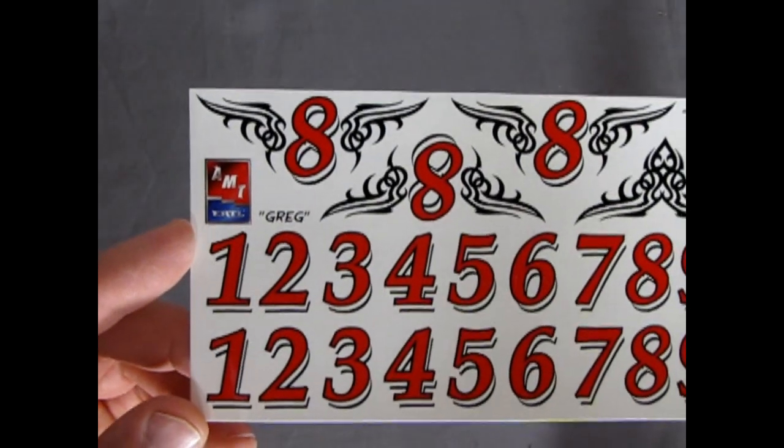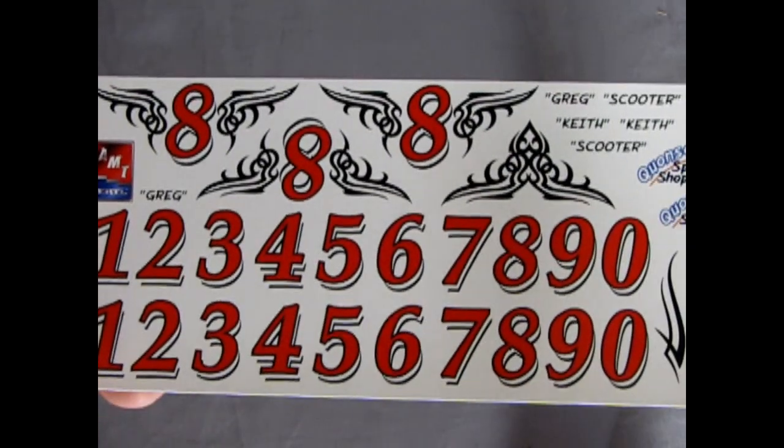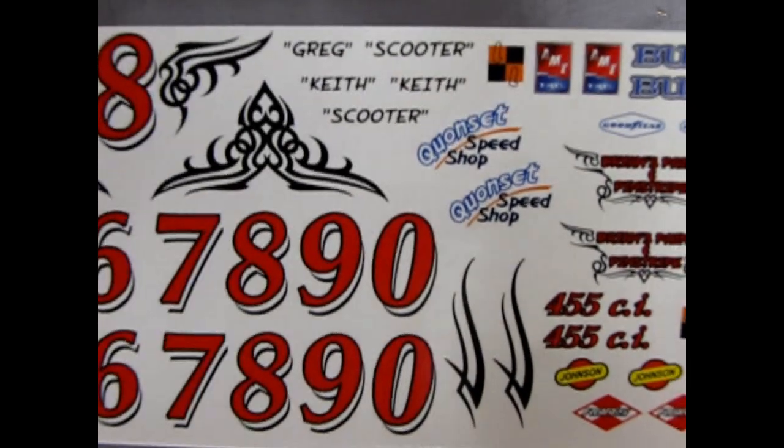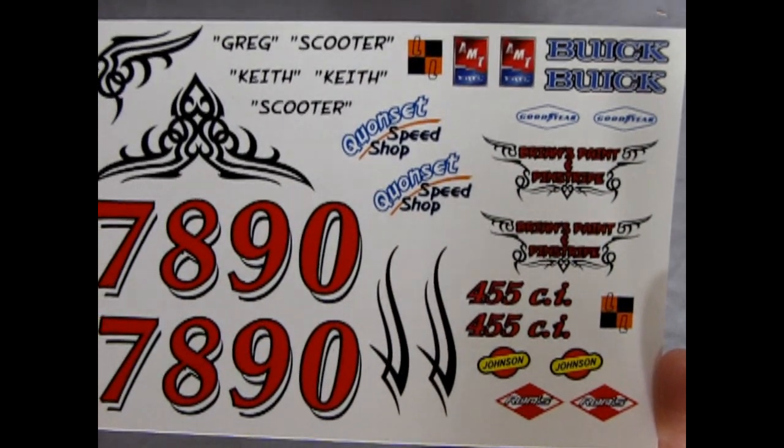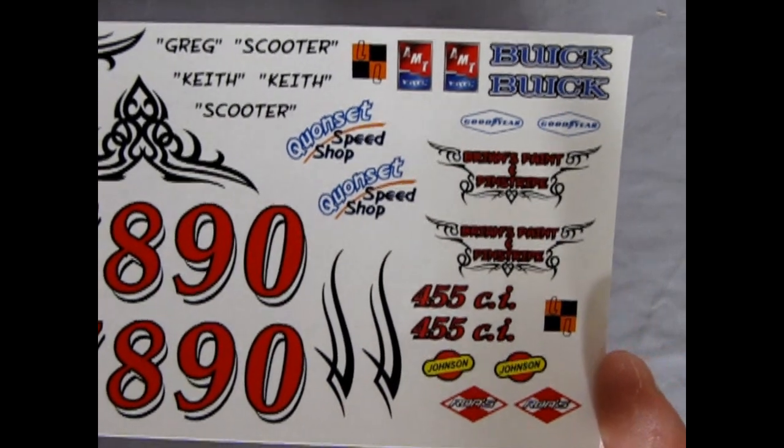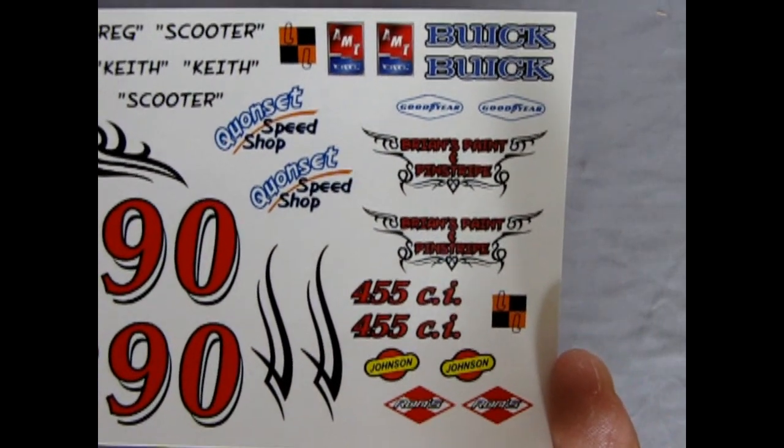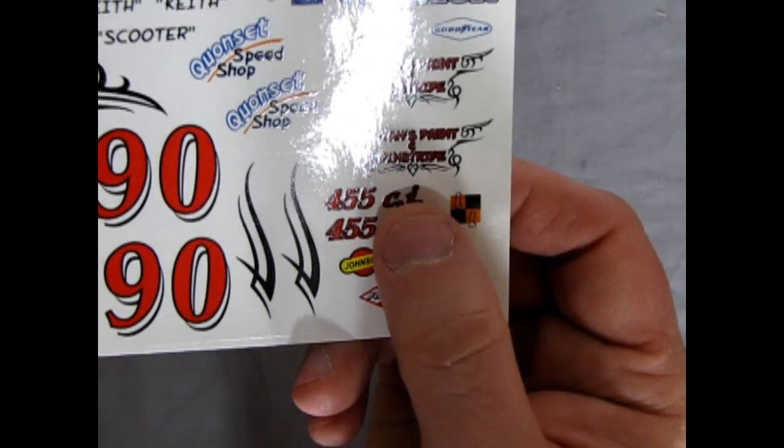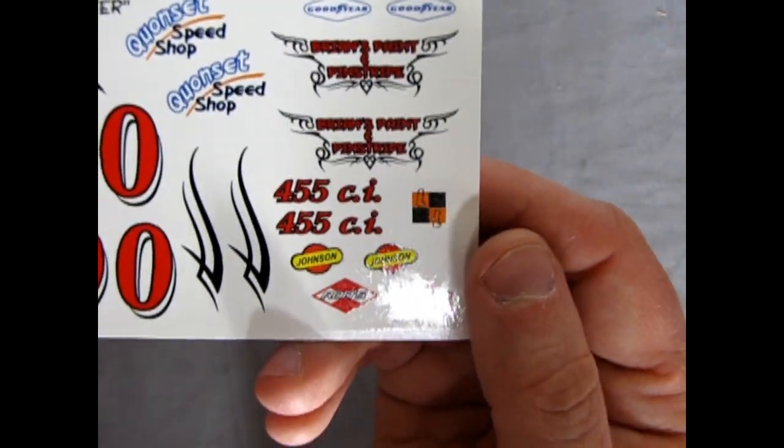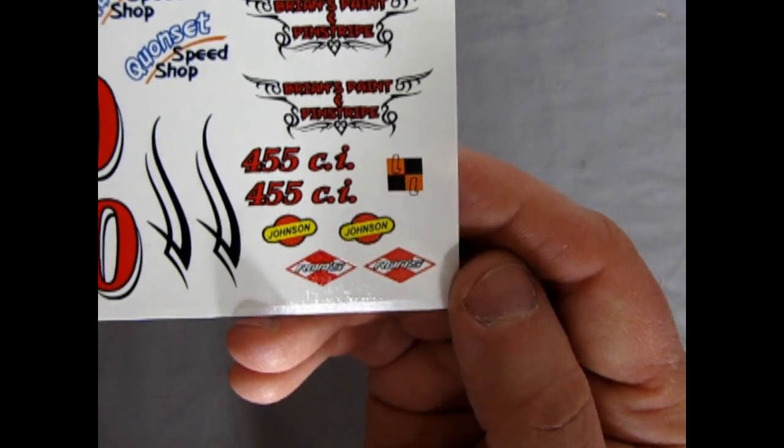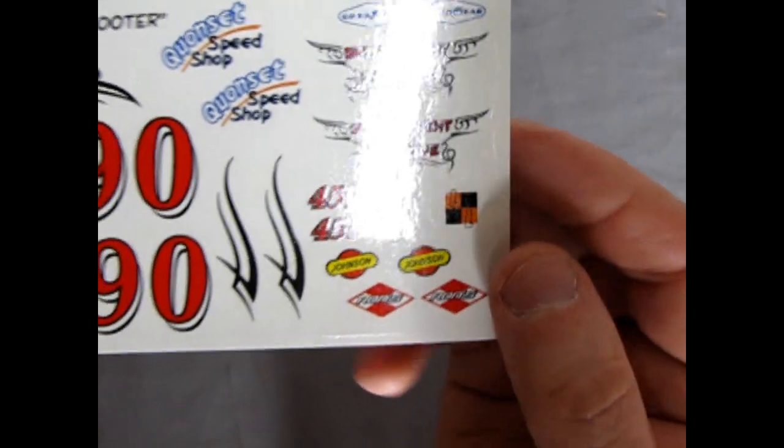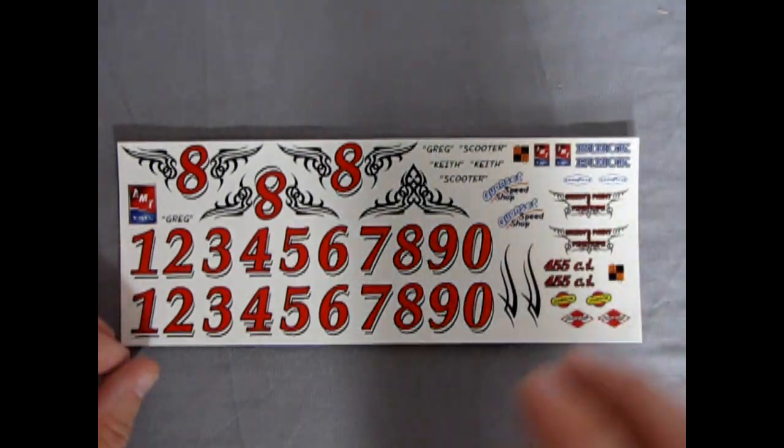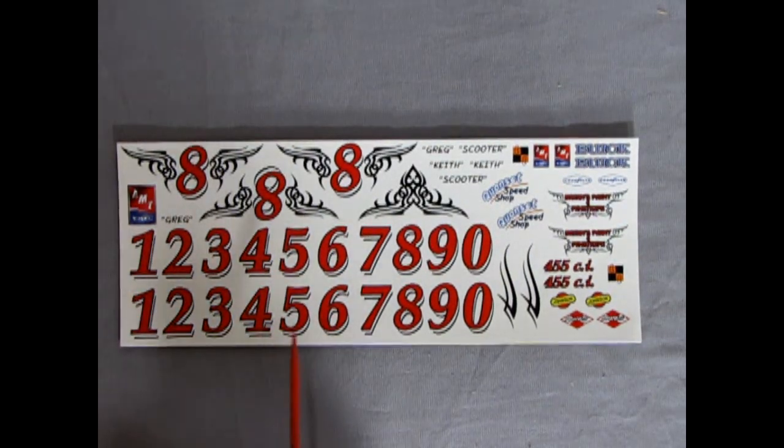There's our flying eight. And, of course, we've got the numbers from one to zero. So you can have any number combination you want if you don't want the flying eights. And then there's our other names. Keith, Scooter, Greg. That's for both sides on the roof or by the doors there, actually. There's your Buick and Quonset Speed Shop. And Brian's paint and pinstripe, which could also go on to some of the 53 Ford trucks on the doors if you want it. Or a station wagon or anything. And that's our decals. So, let us know in the comments below which one of these great decal sheets that you like. Be it the 34 Ford, the 35 Chevy, the 64 Oldsmobile, or the, sorry, the 65 Oldsmobile, or the 66 Buick here.